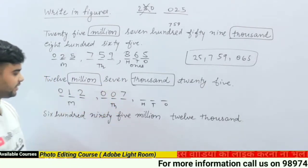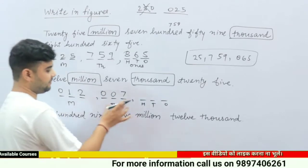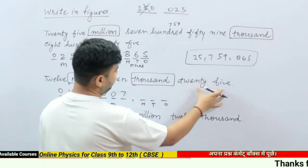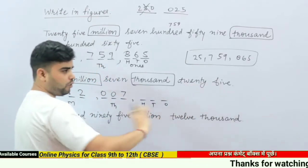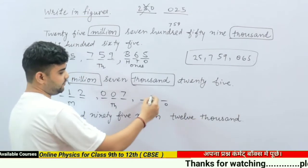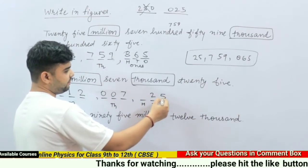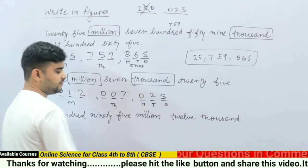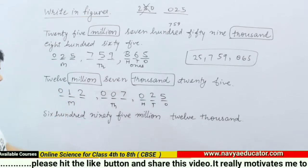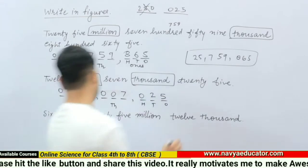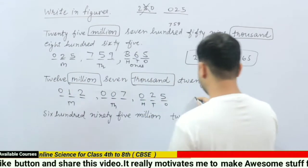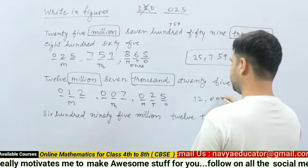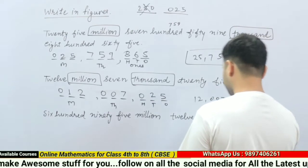Seven thousand is done. In the last section, we write 25 — no hundreds are given, only twenty-five, so the hundreds digit will be zero, giving us 025. The complete number is 12,007,025 — twelve million seven thousand and twenty-five. This is the answer for this question.